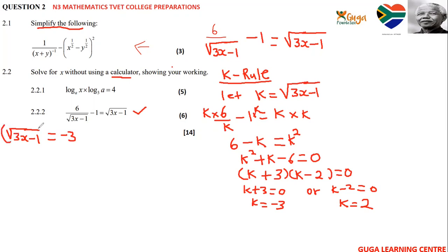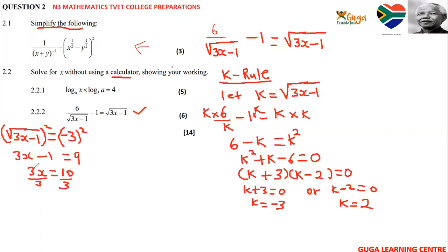Squaring both sides removes the square root: three x minus one equals nine, so three x equals ten, and dividing both sides by three gives x equals ten over three. For the other solution, k equals two: root of three x minus one equals two.